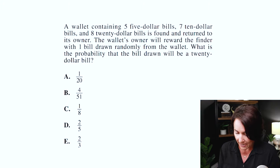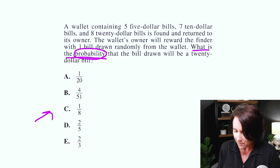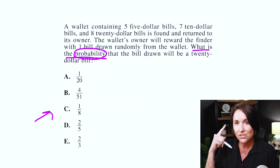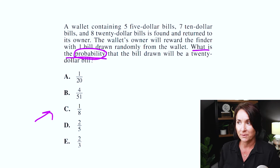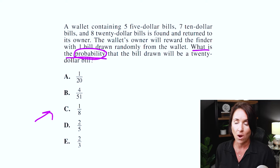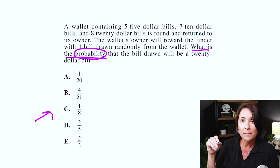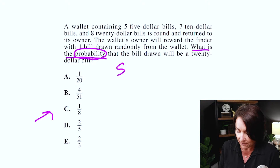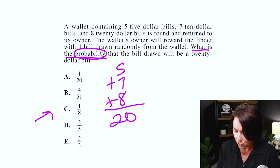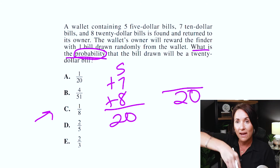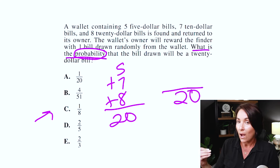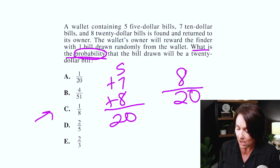Let's go on to the next one. I've got fractions — not a huge fan of fractions, but something I've got to do for this test. It says: what is the probability that the bill drawn will be a $20 bill? A wallet contains five $5 bills, seven $10 bills, and eight $20 bills. The wallet's owner will reward the finder with one bill drawn randomly from the wallet. All it's saying is which bill am I going to draw randomly. Probability means the whole on the bottom and the part on top. So the whole is 5 plus 7 plus 8, which equals 20 — so 20 is on the bottom.